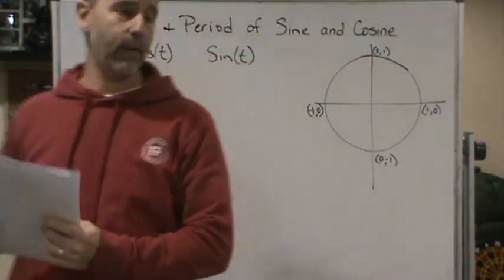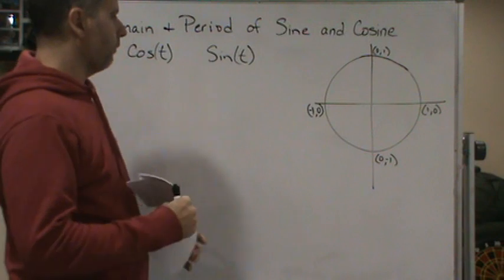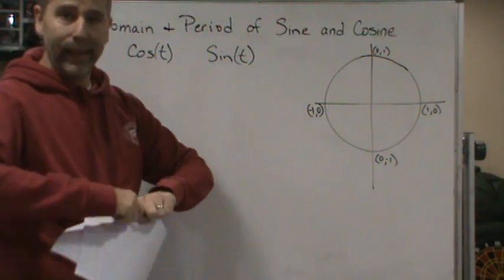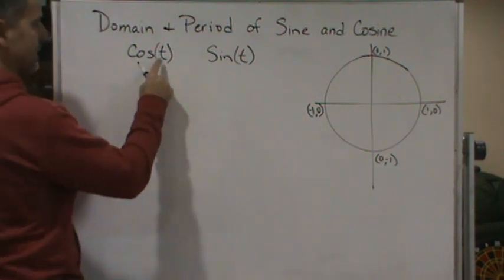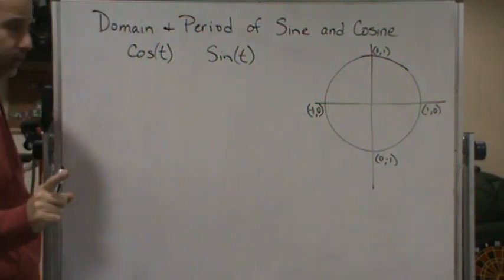So if we look at this unit circle here, remember the domain is going to be all the values that go into the function, right? So it's all the values of t. t is a real number.